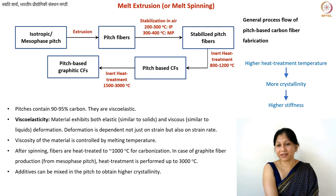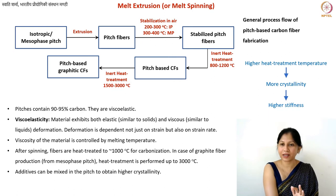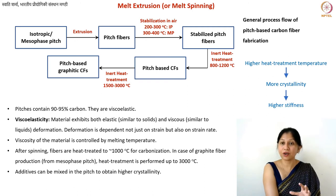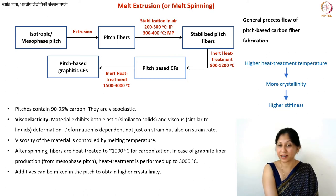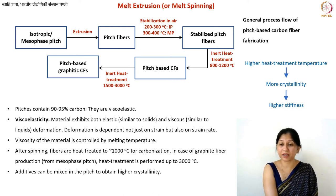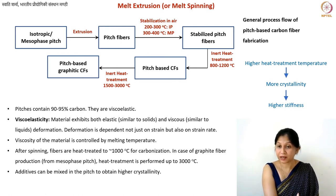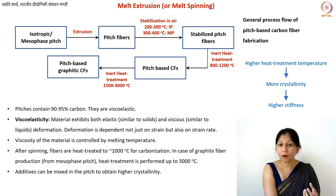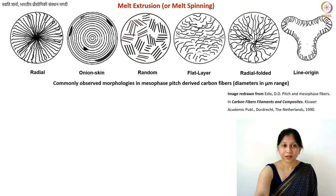The golden rule for all carbon materials: higher the heat treatment temperature, higher the crystallinity, higher the stiffness (Young's modulus). This is also valid for fibers and is industrially very important. For pitch-based carbon fibers especially, higher heat treatment temperature increases cost, so heat treatment temperature is a direct measure of the quality of your carbon fibers.